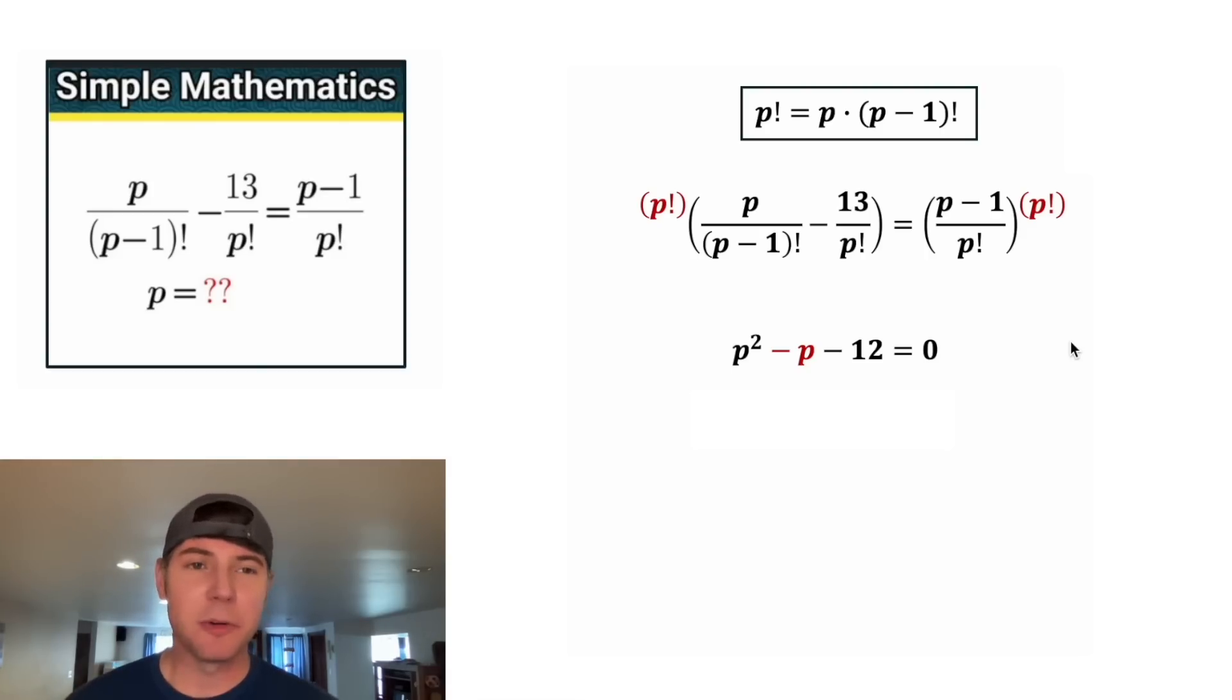And then from here, we can do a quadratic formula, we can complete the square, or we can factor. For this one, it'll probably be easiest to factor. So this P squared is going to break down into P times P. And then to take care of everything else, we need two numbers that add to negative one and multiply to negative 12. That'll be negative four and positive three. And if you want to practice more of these factoring things, I'll put a link to that video here.